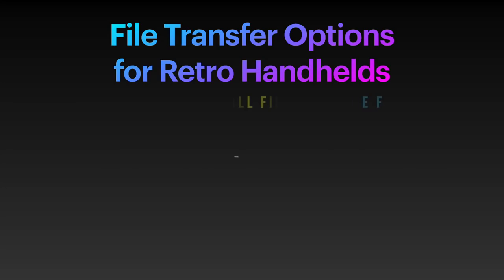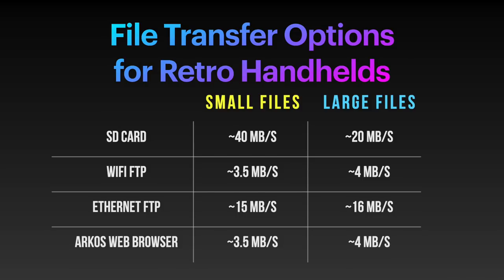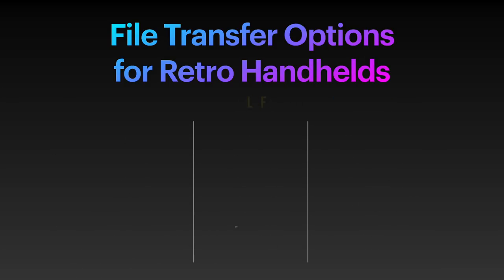In summary, here are the different file transfer speeds for the various options available on these devices. The SD card is much faster — smaller files at about 40 megabytes per second, and large files at 20 megabytes per second. Wi-Fi FTP is definitely the slowest at about three and a half to four megabytes per second. The ArcOS web browser feels about that same speed as well. Ethernet FTP is much faster than wireless FTP. One quick note: the Odroid Go Super can run a 5 GHz Wi-Fi adapter, so you'll probably get much faster Wi-Fi transfer speeds on that device.